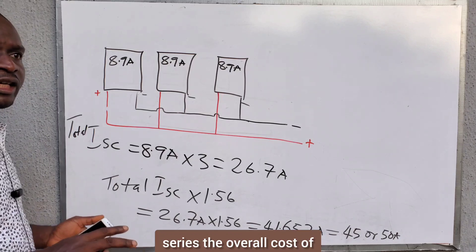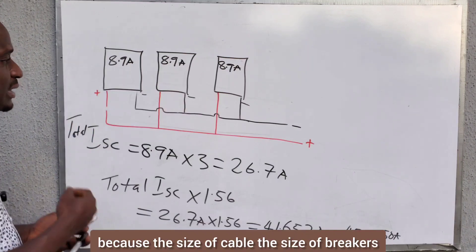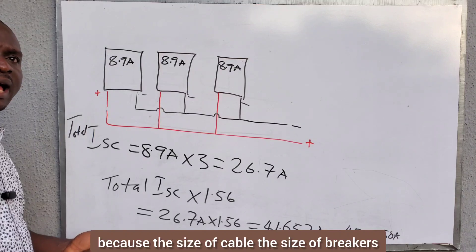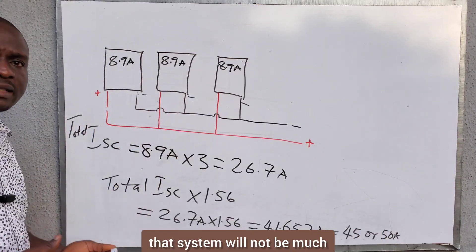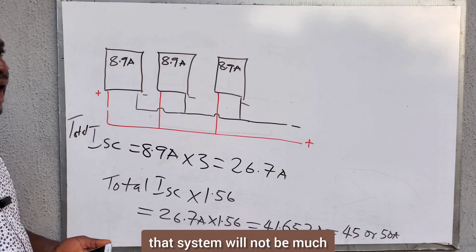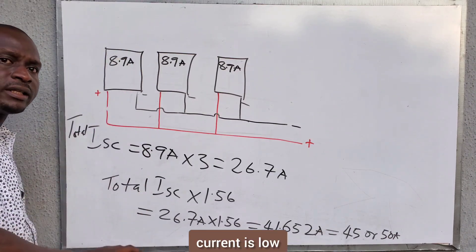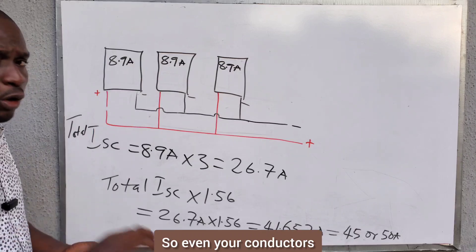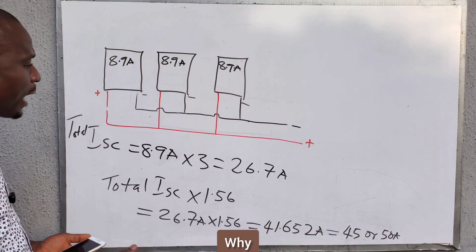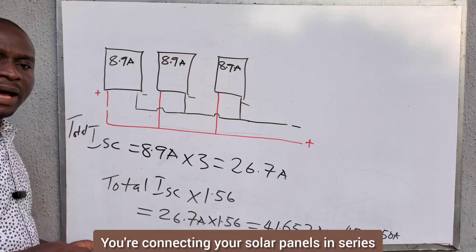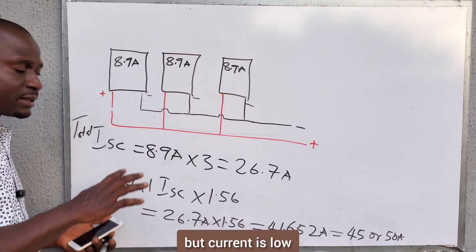That is why if you do your connection in series, the overall cost of the system will not be high, because the size of cable, the size of breakers, and the OCPDs you are going to install will not be large. Why? Because the voltage is high and the current is low. So even your conductors — the cables you are going to use — will not need to be large, since you're connecting your solar panels in series.